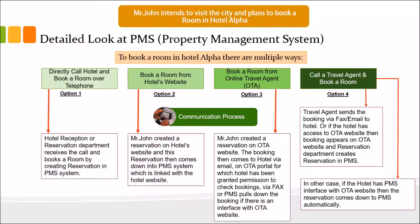When creating a reservation on the hotel website or OTA website, the credit card number goes to the hotel, which verifies the card details. Once verified, you have a guaranteed booking. Non-guaranteed means you can put any credit card without the hotel verifying its validity. Non-guaranteed bookings can also be cancelled before the arrival date, depending on the terms and conditions given on the website.